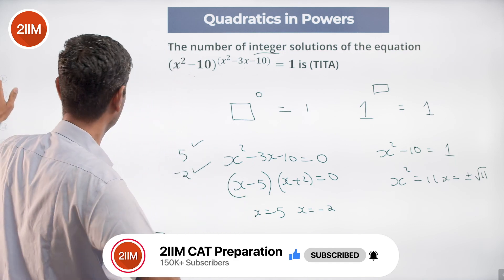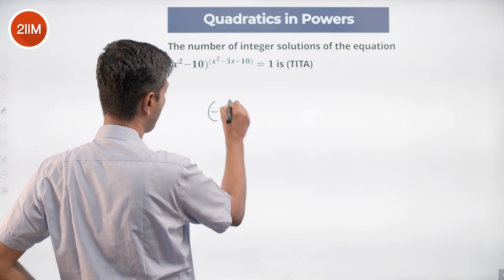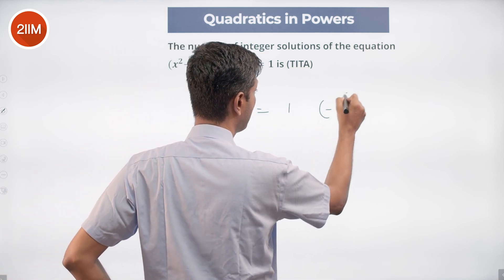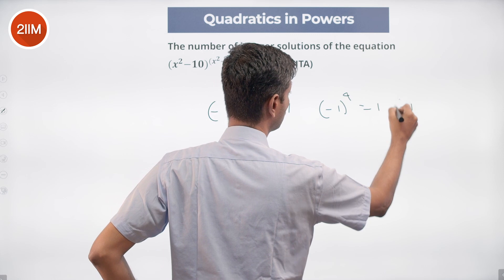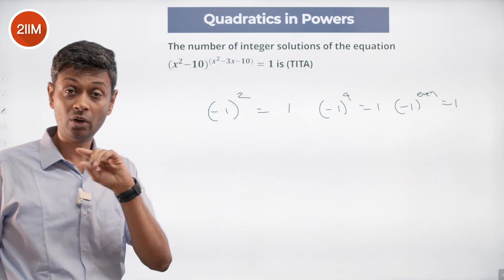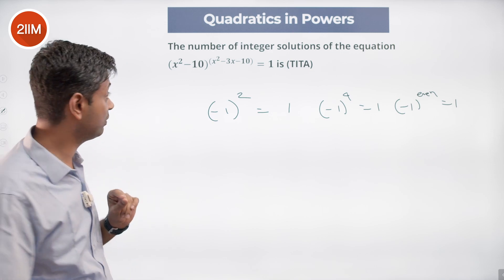which is: -1 squared is 1, -1 to the power 4 is 1, -1 to the power of an even number is 1. There is a possibility of that happening, in which case I have to verify that.